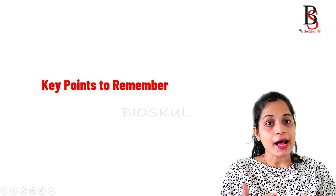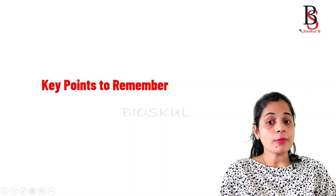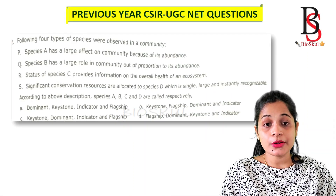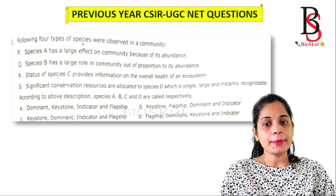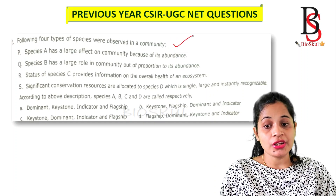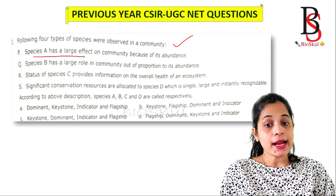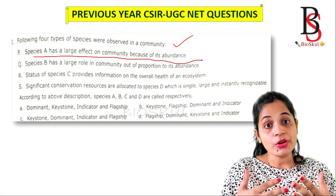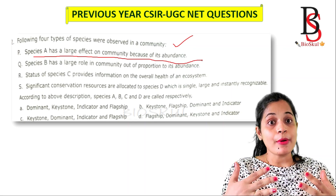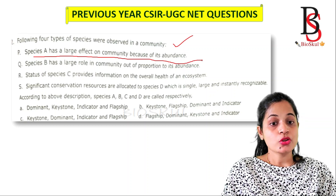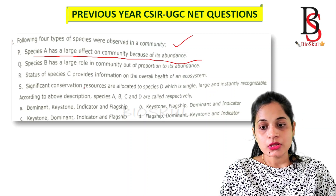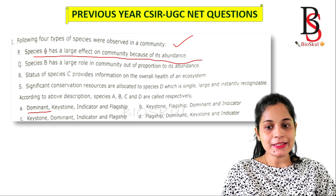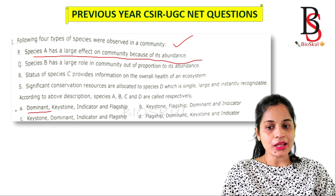Questions in the exam are mostly asked from the definitions. Let's look at some previous year CSIR UGC NET questions. The first question: four types of species were observed in a community. Species A has a large effect on the community because of its abundance — it has the greater biomass. This describes the dominant species. In the options, the dominant species is listed under option A, so the correct answer is option A.